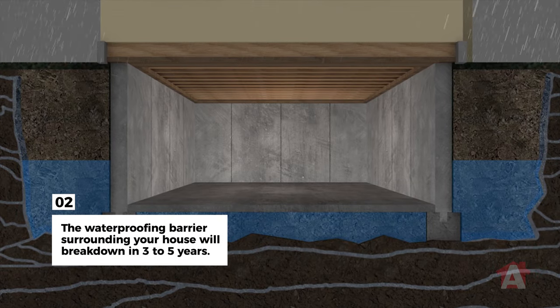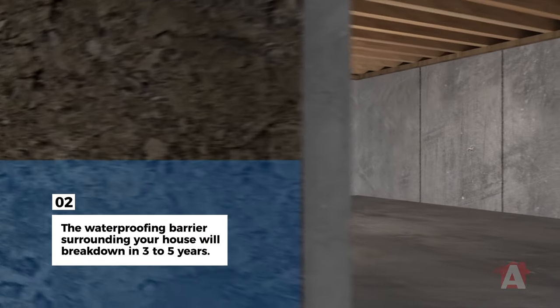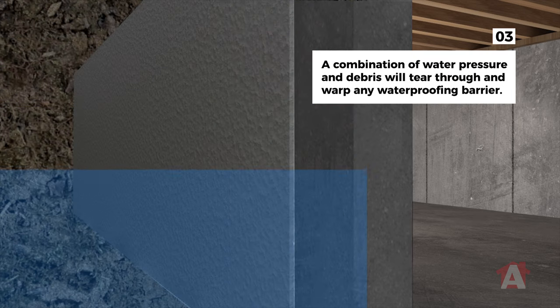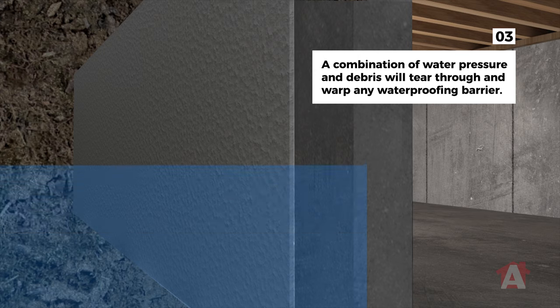Repeated rainstorms will break down the three to five year lifespan of waterproofing surrounding the house. A combination of water pressure and time will destroy your waterproofing barrier.